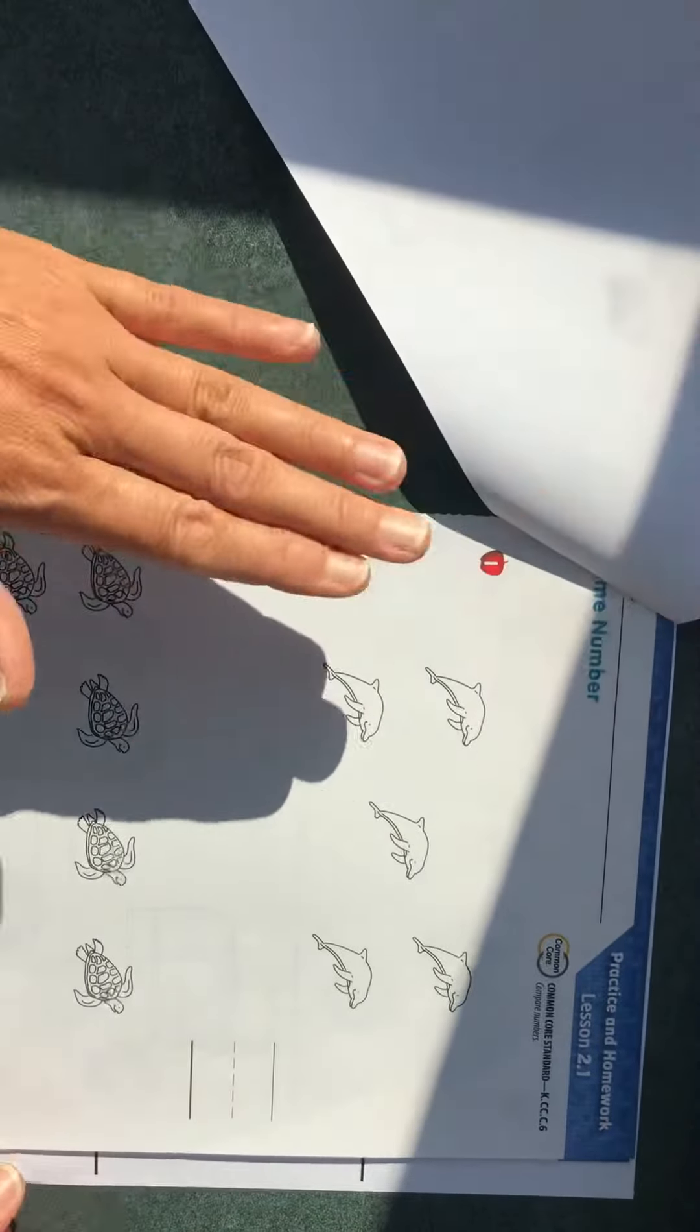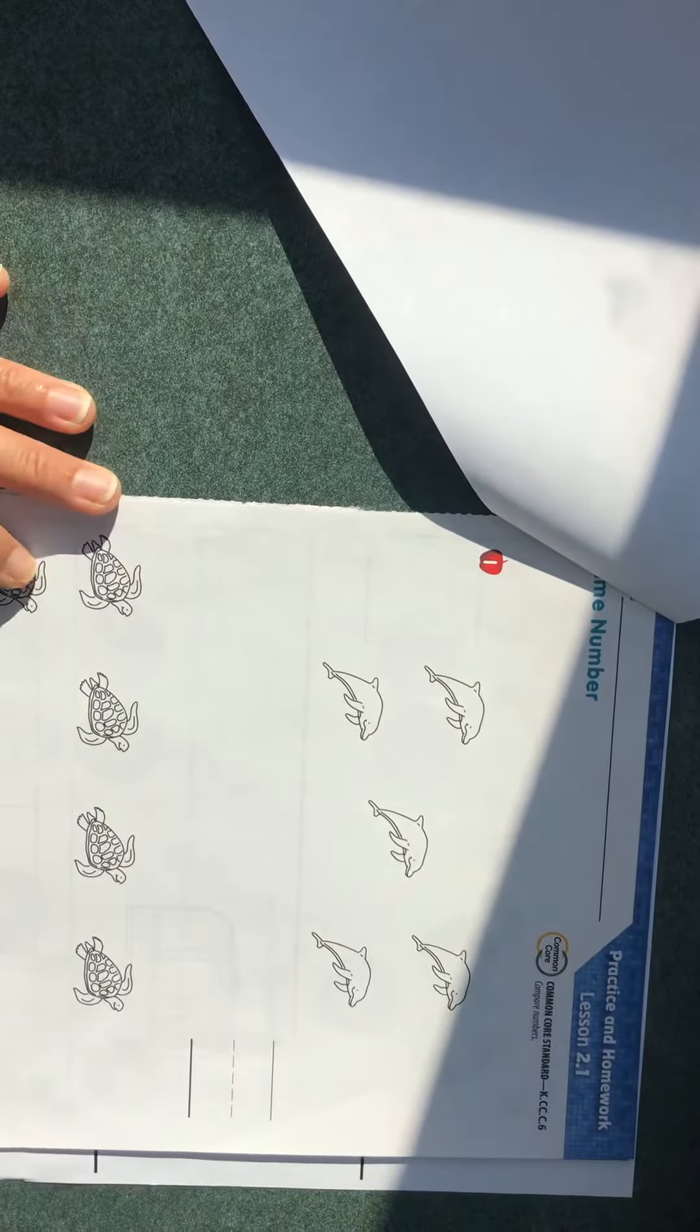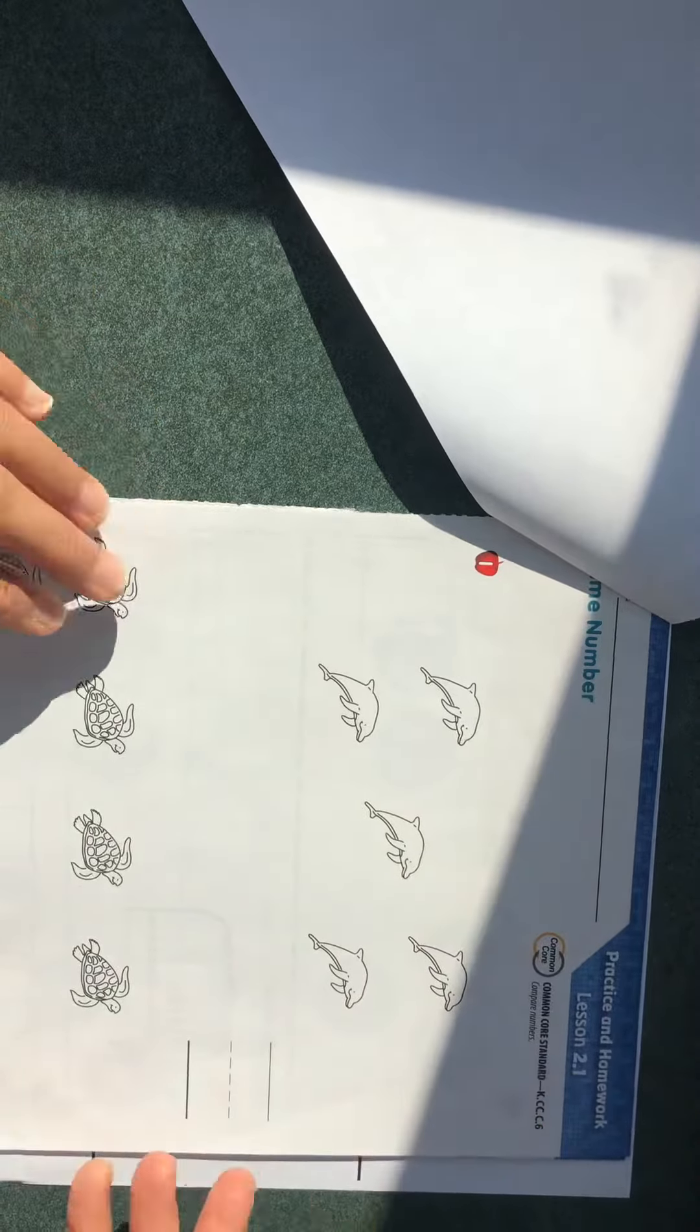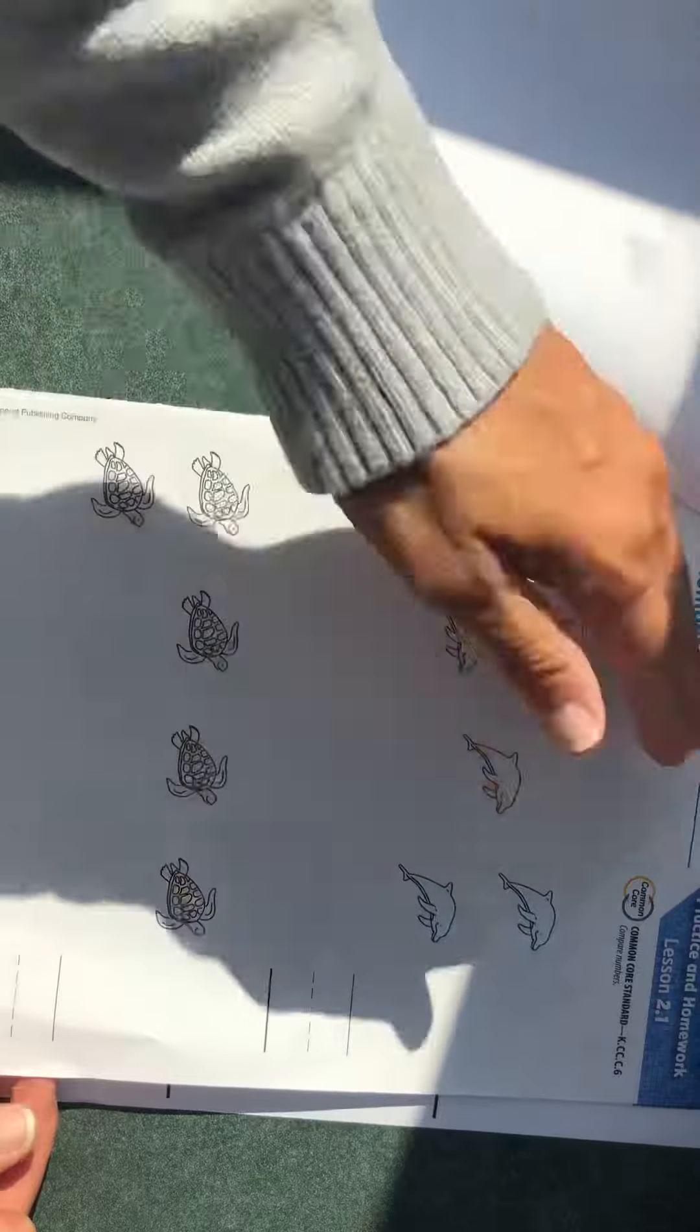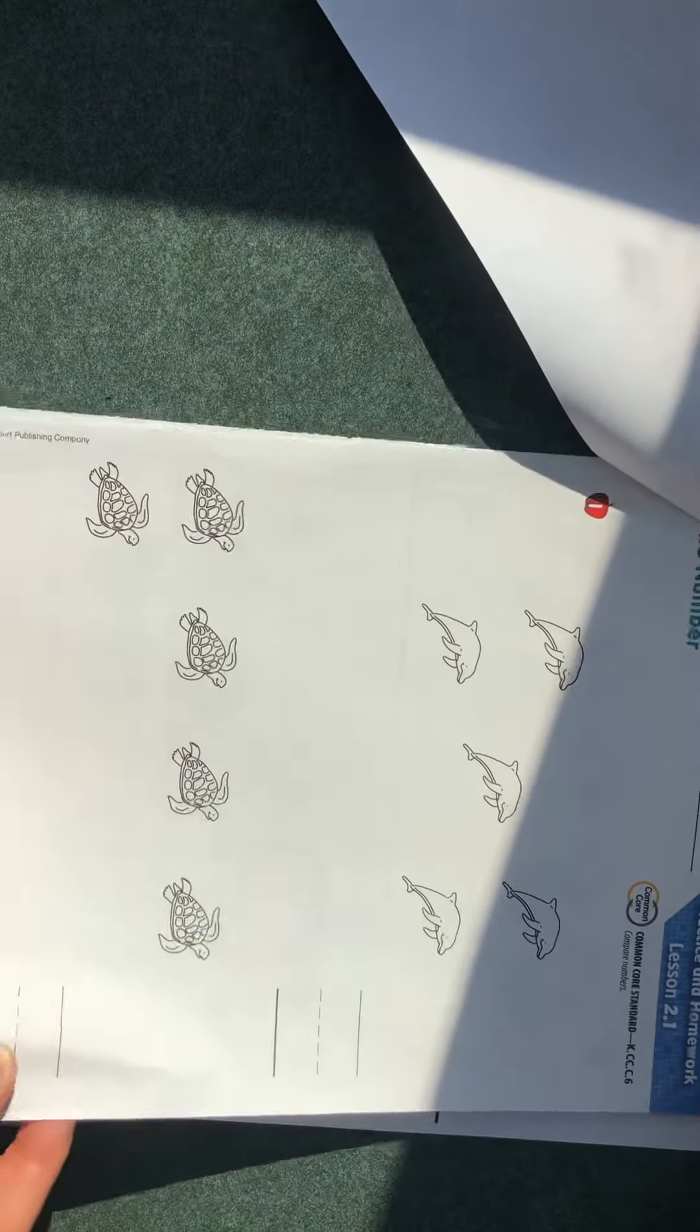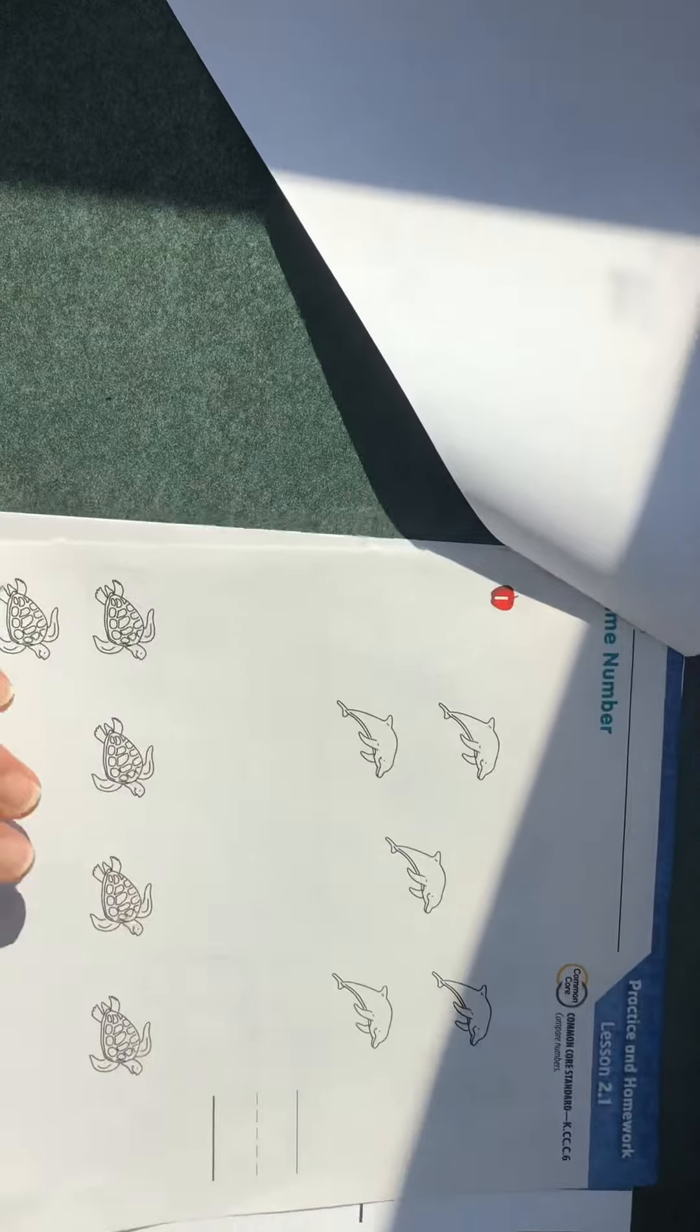For homework, for math homework, the students have to cross and count. Tienen que cruzar y contar, y escribir el número. After they cross and count, they're going to realize that the numbers are the same. This is practicing the same number, el mismo número.